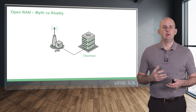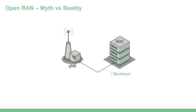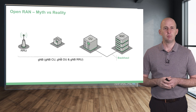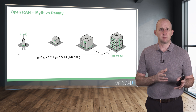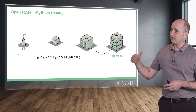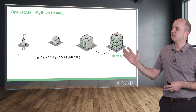Open RAN really centres around the notion of a disaggregated gNodeB, where we pull apart the gNodeB into several geographically separate functional components. Collectively the Remote Radio Unit, the Distributed Unit, and the Centralized Unit all do the job of the 5G base station, but we distribute responsibilities in terms of processing across these different entities. We're effectively splitting up the protocol stack and giving different responsibilities to each of these functional elements.